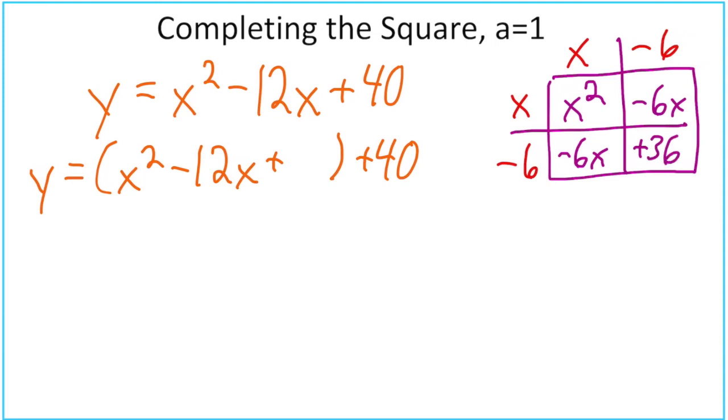That positive 36 can go ahead and go inside the parentheses. Now, what do I do to even out my equation here? Because you can't just add whatever you want to one side. Remember, today everything has an a value of 1. So we are technically going 1 times 36, which has a value of positive 36. So we have to do the opposite, minus 36 on the outside.